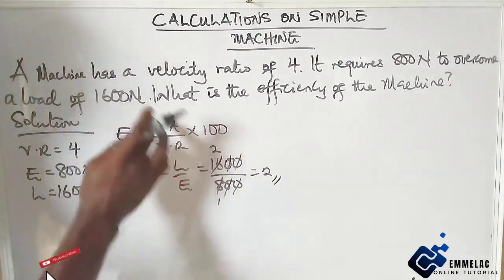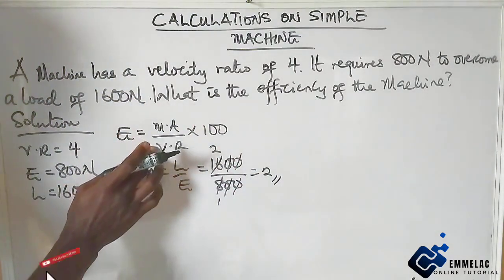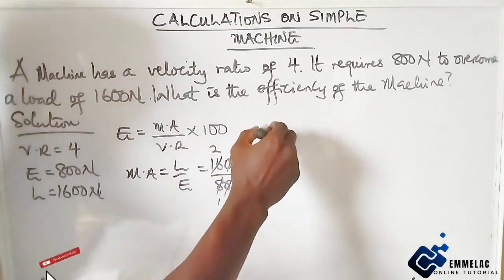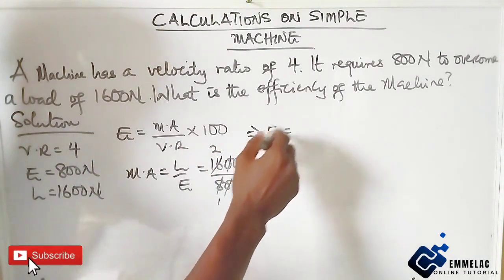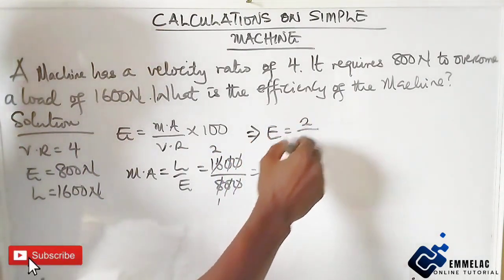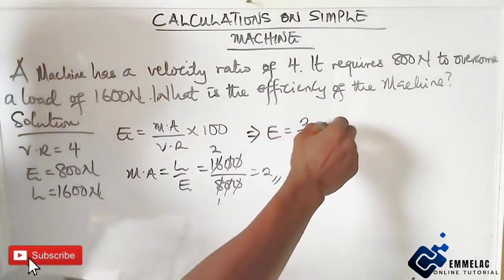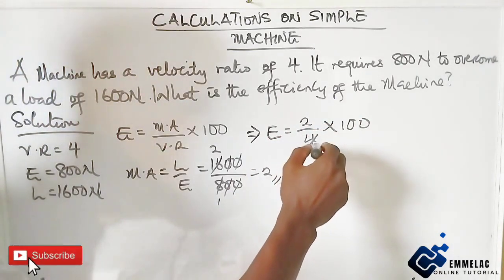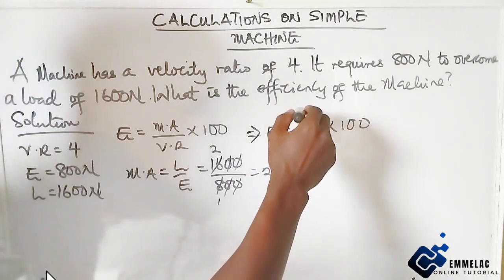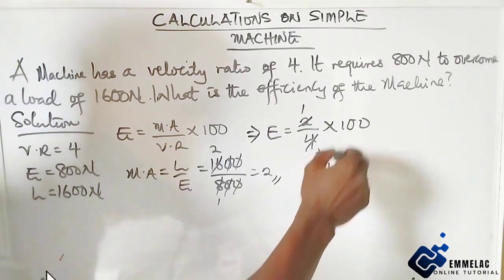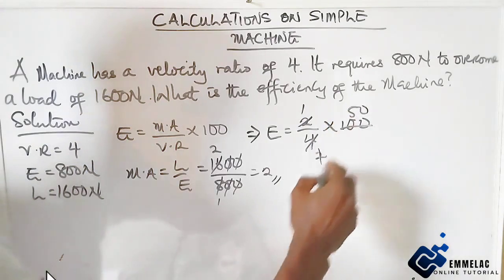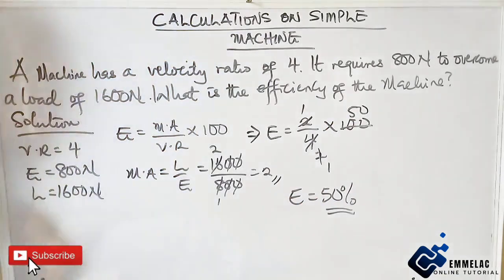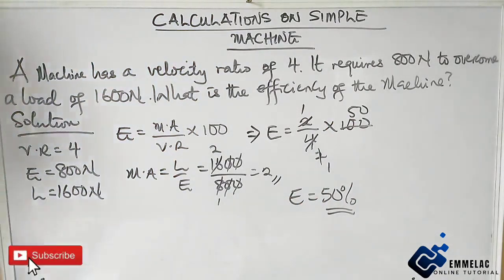Now if we input this into the efficiency formula with our velocity ratio of 4, we have mechanical advantage 2 over 4 times 100. This simplifies to 50. So our efficiency for this machine is 50%.